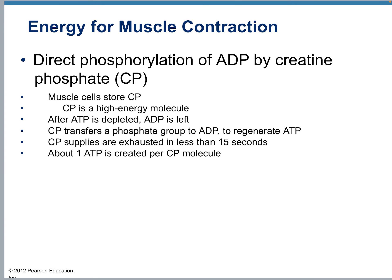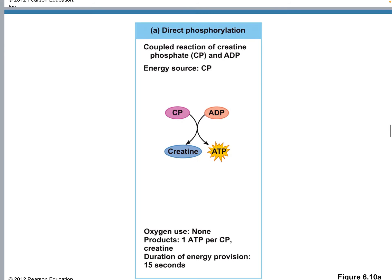The easiest pathway is direct phosphorylation of ADP by creatine phosphate. Your muscle cells store creatine phosphate (CP), a high-energy molecule. After ATP is depleted, adenosine diphosphate (ADP) is left. Creatine phosphate then transfers a phosphate group to ADP to turn it back into ATP. Once you run out of stored ATP, creatine phosphate will start donating more phosphates to keep ATP levels high — you have about 15 seconds that you can rely on that.